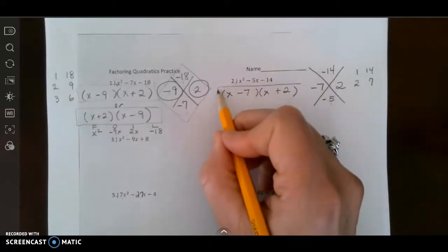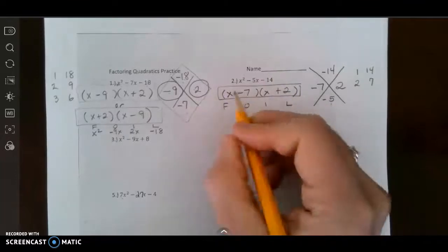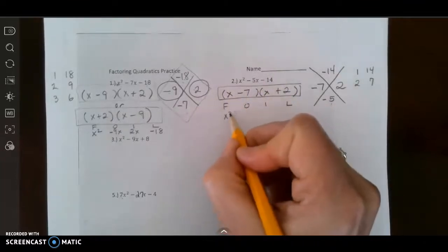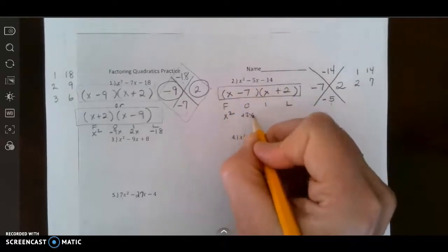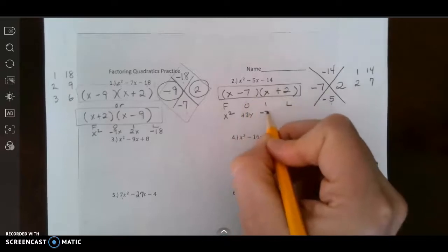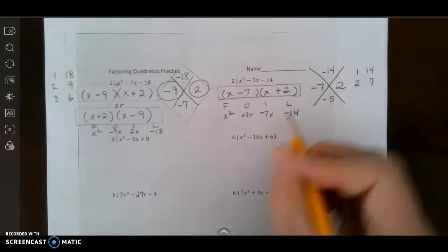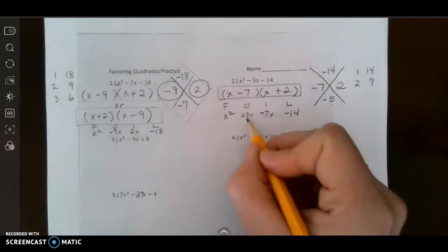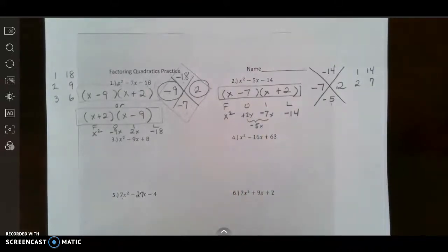Now I am going to check my work just to make sure that I didn't make a mistake. First I get x squared. Outers I get 2x. Inners I get negative 7x. And last terms I get negative 14. And this would indeed give me that negative 5x that I was looking for. All right so those are the two that I was going to do with you where the leading coefficient was 1.